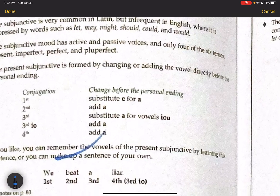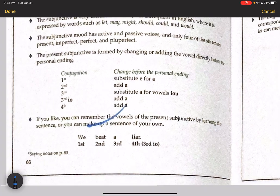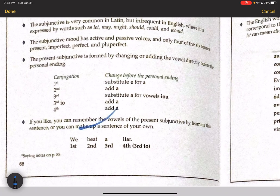We see this in a little chart down here. The first conjugation substitutes e for a. The second adds the a. The third substitutes a for the vowels. And the third io adds an a, and fourth adds an a. So that's a chart explaining that. And then we have a little memory device. We beat a liar. So you see here, the first conjugation has e, second ea, third a, and fourth ia.